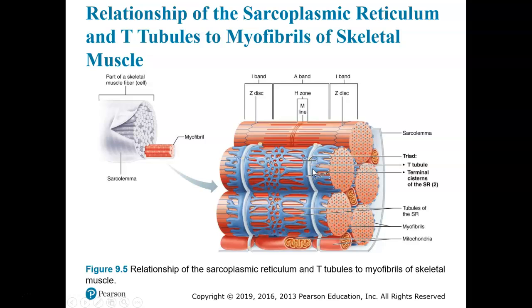We call those expanded ends the terminal cisternae. Cisternae, or cisterns, store things — it's an old-timey word meaning something used to store something. The terminal cisternae store calcium. When you have a T-tubule with two terminal cisternae on each side, you call that a triad. The T-tubule and the terminal cisternae together are called a triad, and they help transmit the action potential all the way through the muscle fiber so the muscle fiber can contract.